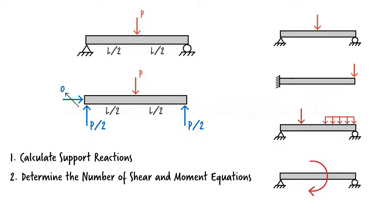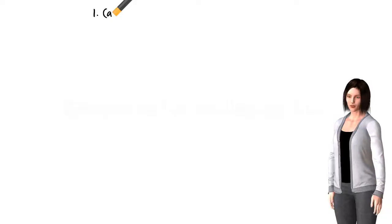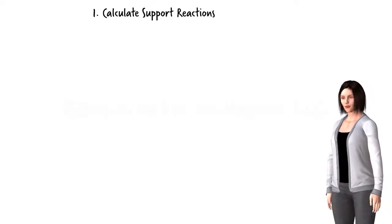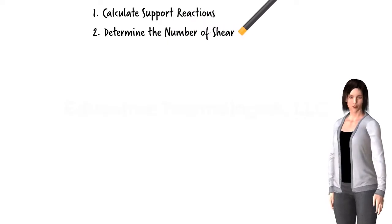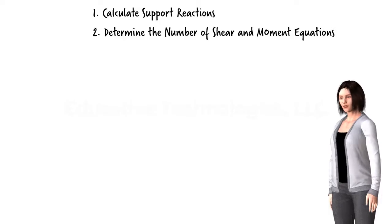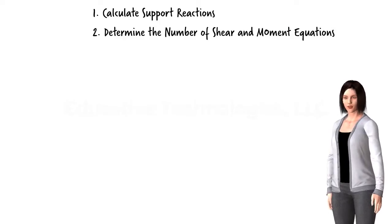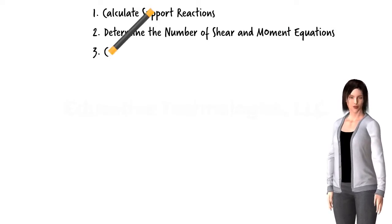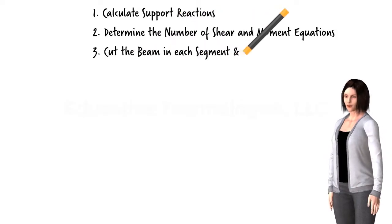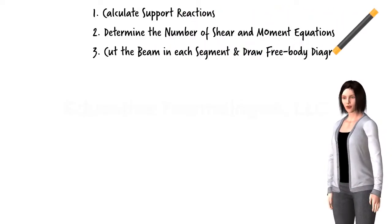To summarize: to write shear and moment equations, first we calculate the beam's support reactions. Second, we determine the number of segments the beam needs to be divided into for formulating shear and moment equations. Third, we cut the beam in each of the identified segments at some distance x from the left end of the beam. For example, if the beam has two segments AB and BC, we cut it twice — once in segment AB and once in segment BC. Then we draw the free body diagram for each segment.